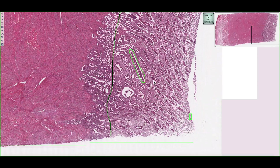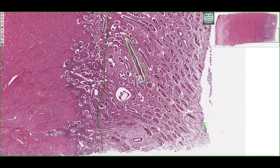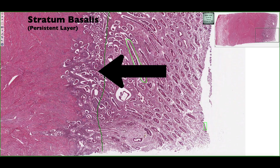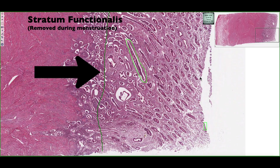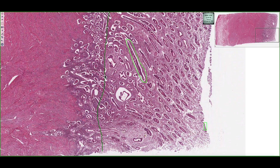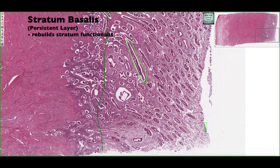Below this green line, we'll have what's called the stratum basalis. Beyond this green line, we have the stratum functionalis. It's the stratum functionalis layer that is going to be sloughed off during menstruation. The stratum basalis is going to contain glands as well as arteries that are going to help reconstitute and rebuild the endometrial lining that's sloughed off during menstruation.